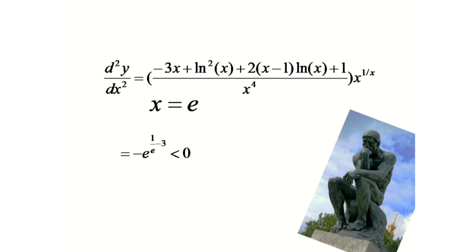So at x equals to e, our y is maximum. It means e to the power 1 by e will be greater than or equals to x to the power 1 by x for all values of x.